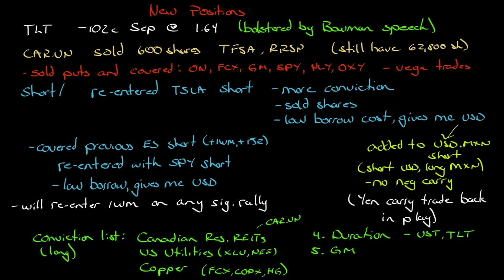For positions this week: TLT $102 call, September, $1.64 - I did this on Monday. I still have them, but the position is bolstered by Bowman's speech. Cap REIT: I did sell 600 shares - 300 at $49.48 and 300 at $49.50 - out of my TFSA and RSP. I still have 62,800 shares. I'm just lightening up - I'm not leaving the trade. If I did have to sell 62,800 shares, you're not going to get that done in one day without moving the price significantly; you have to bleed them out slowly over time.